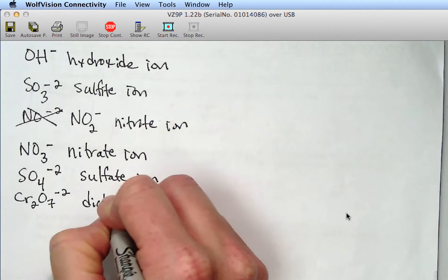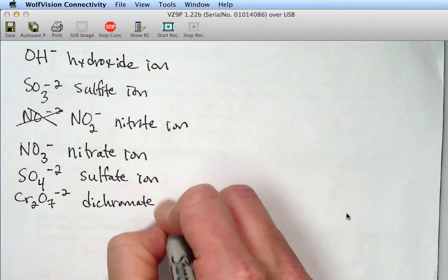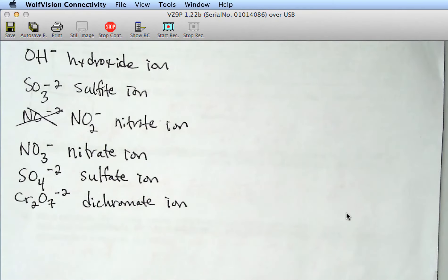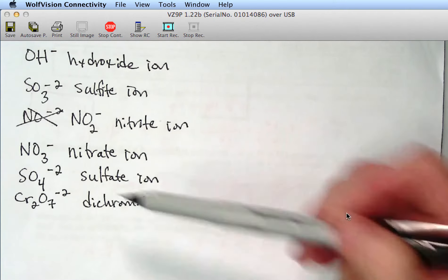Some chemistry courses that you come across, they say, it's got to be two minus. It can't be minus two. We'll learn about what the minus two and two minus means coming up, but I'm not picky. Just as long as you have the subscripts and the superscripts and the elements correct, that's what I'm looking for with these polyatomic ions.